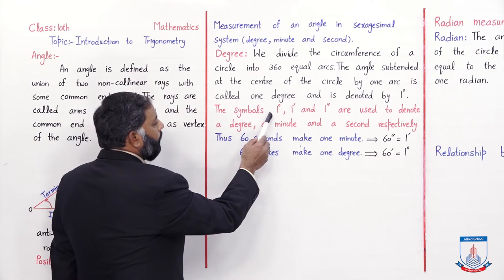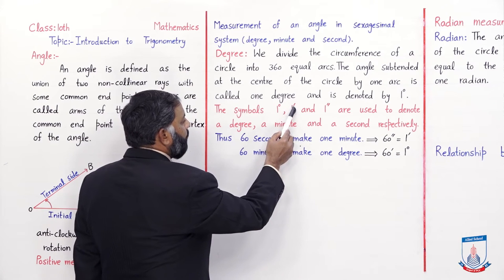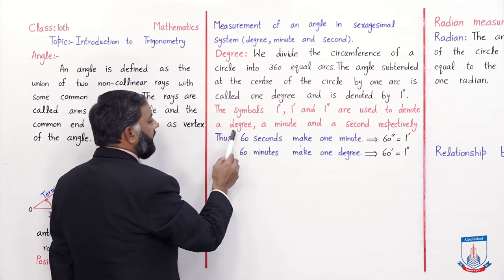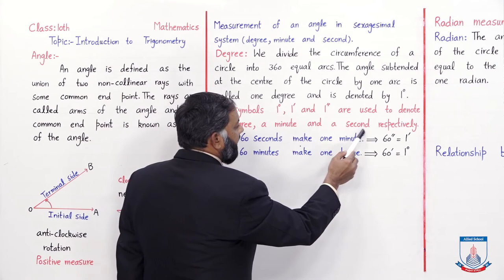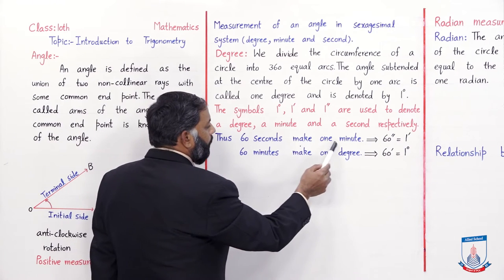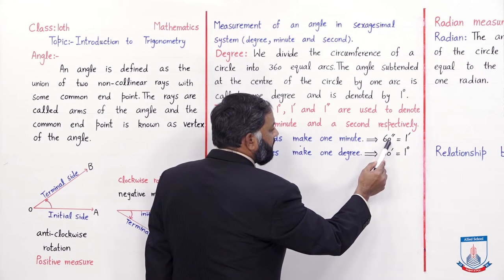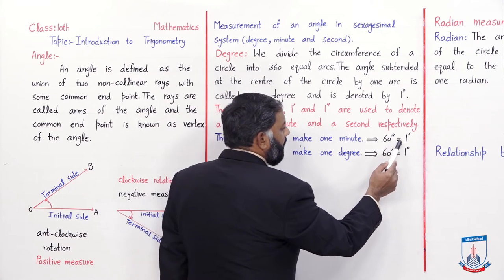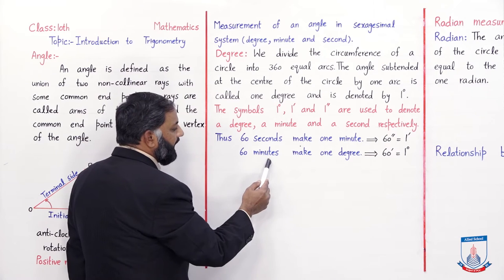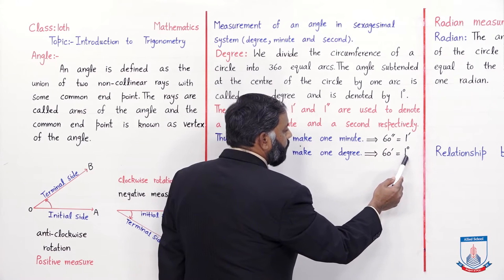The symbols one degree (1 dash above), one minute (single dash), and one second (double dash) are used to denote a degree, a minute, and a second respectively. Thus, 60 seconds make one minute — written in symbols as 60″ = 1′. Similarly, 60 minutes make one degree — written as 60′ = 1°.